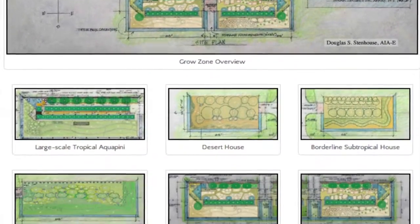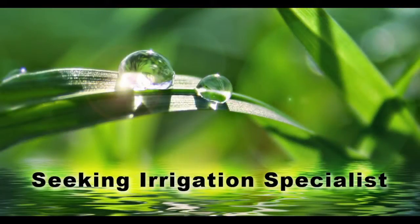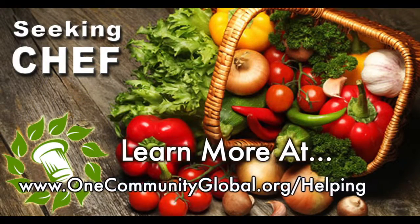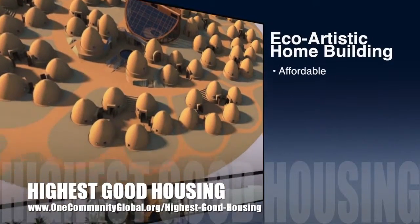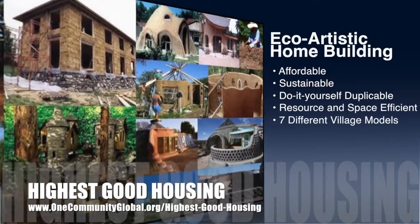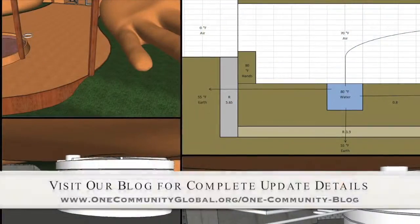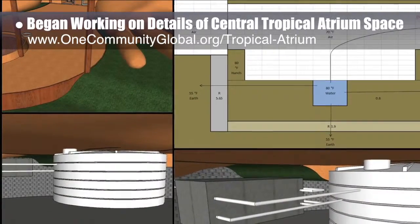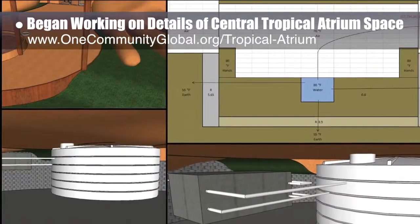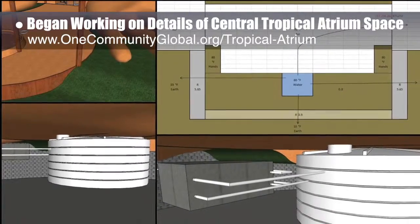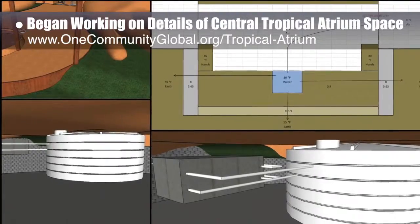Contact us if you have any great resources related to any of these plant species. In this area of our open source project, we are seeking permaculturalists, an irrigation specialist, a surveyor, and a chef to join our team as either consultants or pioneers who will be moving onto the property with us. One Community's approach to Highest Good Housing is eco-artistic home building that is affordable, sustainable, do-it-yourself duplicable, resource and space efficient, and consists of seven different sustainably constructed village models. This week, the core team working on Highest Good Housing began working on the details of the Central Tropical Atrium Recreation Space, which will house the EarthBank Village water storage and recycle the village's used shower water heat. The images shown here illustrate the water reservoir and how we'll be insulating the below-ground aspects of this structure to turn it into a giant thermal mass.